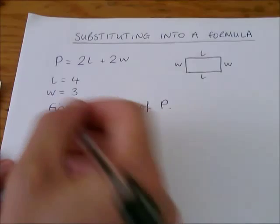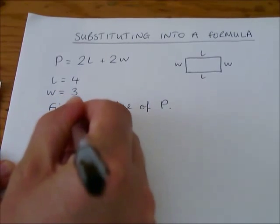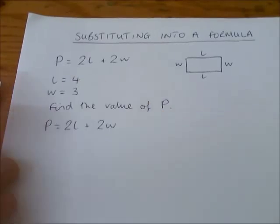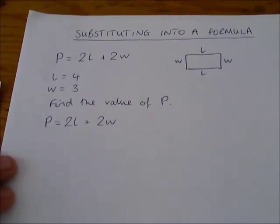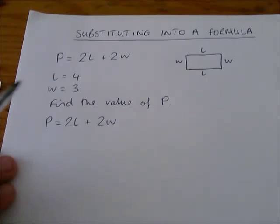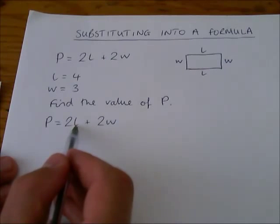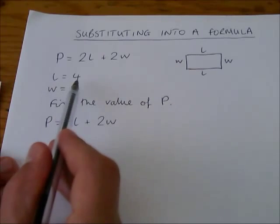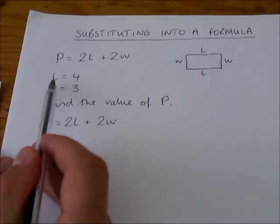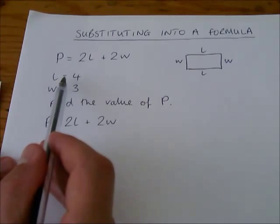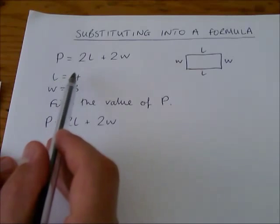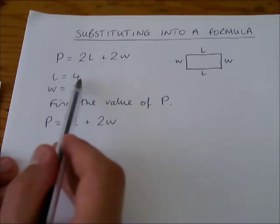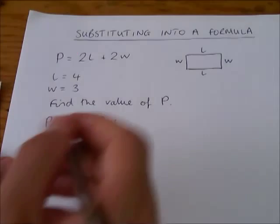So what do we do? Well, we have to start with our formula, like that. And we have to understand that substituting means taking this letter here, this L, and replacing it with the number that we are given. So we're told up here that the letter L equals 4. That means any time we see the letter L, we can replace it with the number 4, because they are equal, they are the same thing.